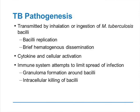Briefly, TB pathogenesis. Generally speaking, TB is transmitted by inhalation of the TB bacilli. It can also be transmitted by ingesting MTB bacilli in the form of raw milk or other products. Once inhaled, the TB bacilli replicates — it is engulfed by pulmonary or alveolar macrophages, and within the macrophage it will replicate and eventually spill out and disseminate hematogenously throughout the body.